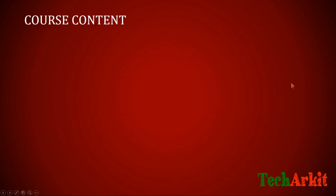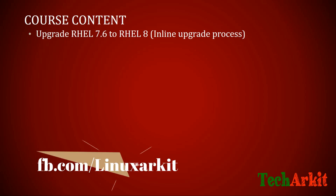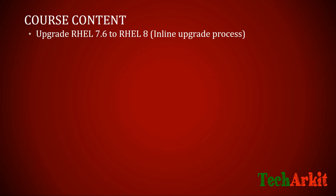So here you can see Step 1: how you can upgrade your RHEL 7.6 to RHEL 8, which is an inline upgrade process. You don't need to reformat the system, install RHEL 8 again, and reinstall all services. An already running system with services can be upgraded from 7.6 to 7.8 — that's the inline upgrade process I'm going to show you in this content.